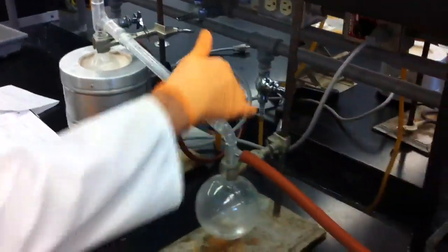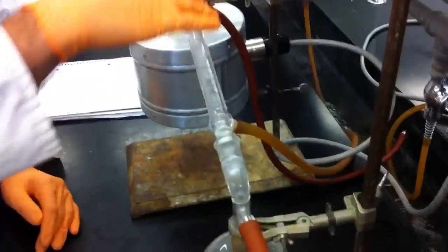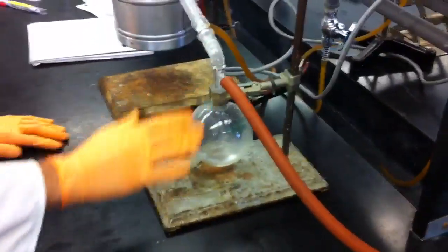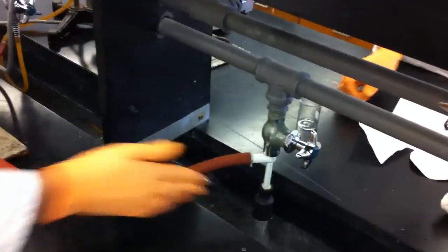Now, the condenser has two hoses attached, one to supply water and one to get rid of the water. Attached to your band is a hose which is connected to your aspirator.